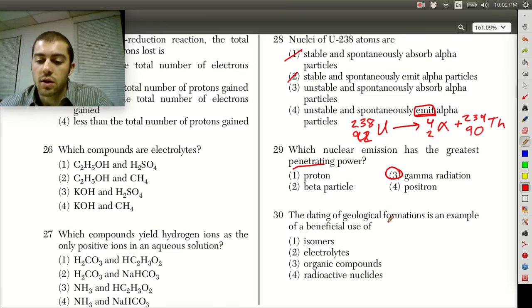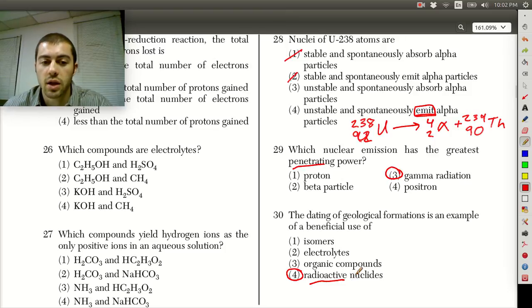For question 30, the dating of geological formations is an example of the use of radioactive nuclides. So we've talked about carbon dating in class. So this is going to be radioactive nuclides because that's radioactive dating, radiometric dating. These are all talking about the same thing here, because the decay of these elements over time allows us to measure those quantities and basically date something relatively, relative to other substances. So again, radioactive dating, a pretty basic concept that should be pretty easy points there.